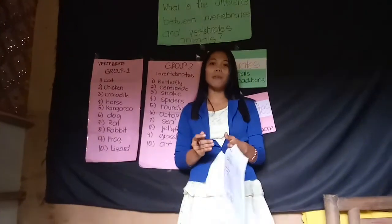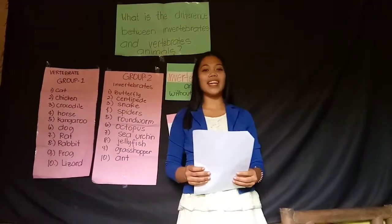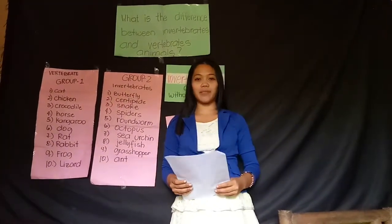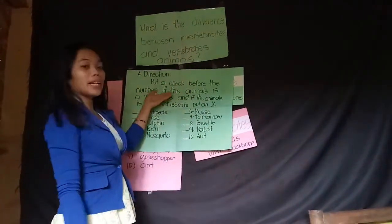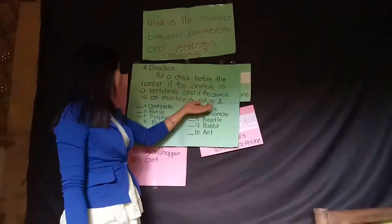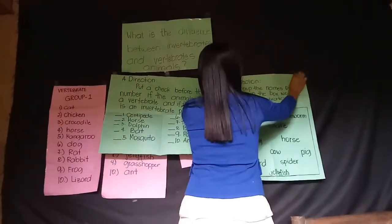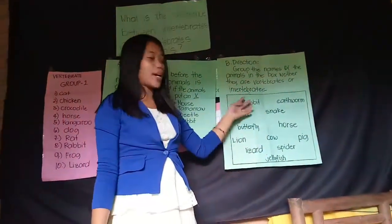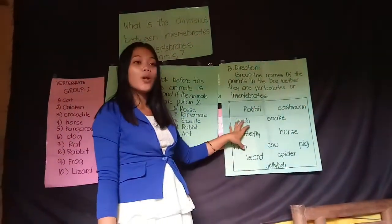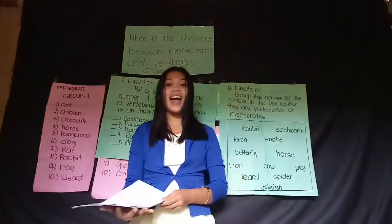Let's give ourselves a round of applause. I guess you have learned a lot in our discussion this morning. Kindly get one half sheet of paper and answer the following. Direction: In letter A, put a check before the number if the animal is a vertebrate, and if the animal is an invertebrate, put an X. In letter B, group the names of the animals in the box whether they are vertebrates or invertebrates. Do you understand, class? Yes, ma'am.